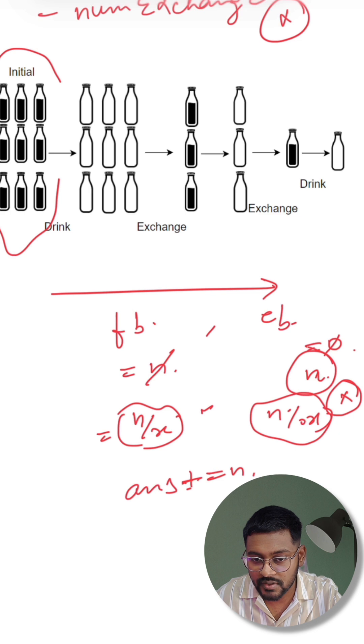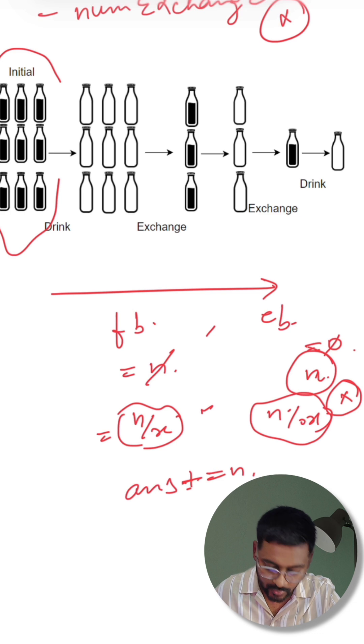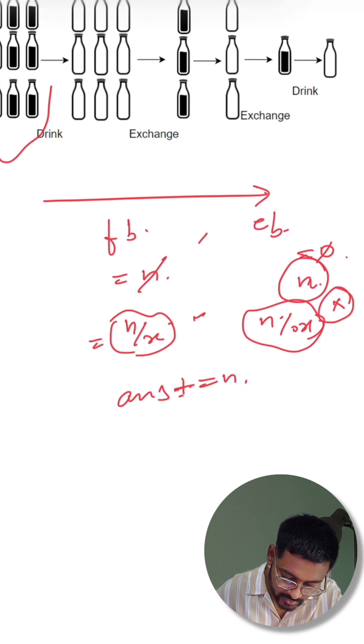So this is the main thing that we have to understand: how many groups of X size we can extract out from the empty bottles. Those will become filled bottles. So it will keep on going. Now I will just consume N by X bottles and those will be appended to the answer.